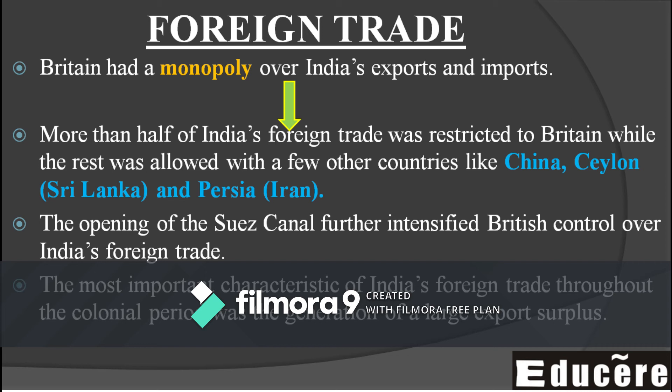The British controlled which countries India could trade with and which it could not. Mostly they wanted to promote their own trade. The main concern was that India supplied raw materials to Britain, and India was a very big market, so British finished goods were dumped here.